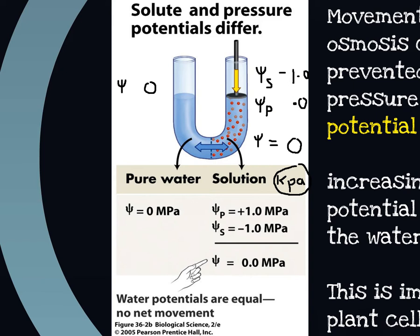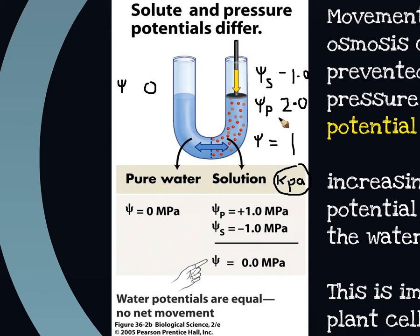If I push even harder and apply a pressure of two kilopascals, then the overall water potential would be one. So in theory, you could actually get a positive water potential by providing that pressure — though it might just be referred to as a pressure potential. That's how reverse osmosis works: applying a greater physical pressure, a pressure potential, greater than the solute potential, to increase the overall water potential on one side.